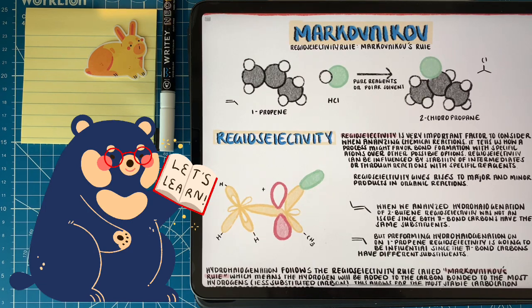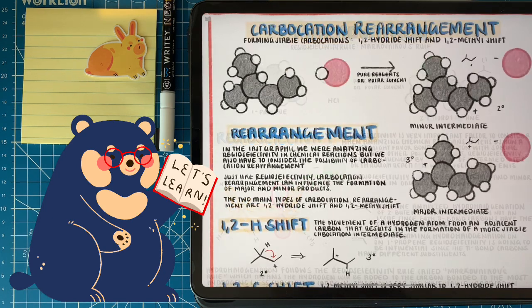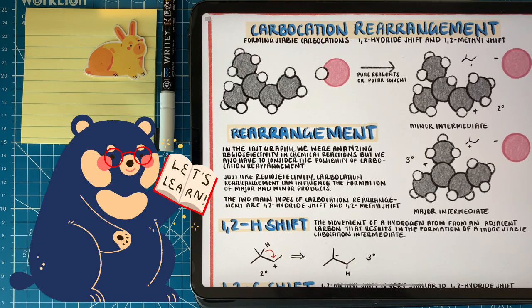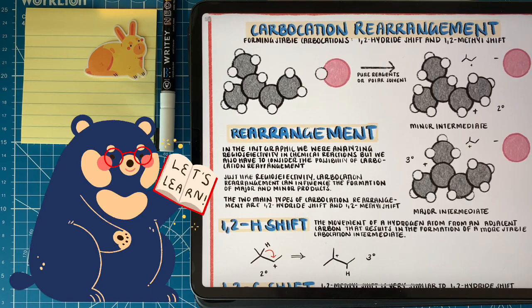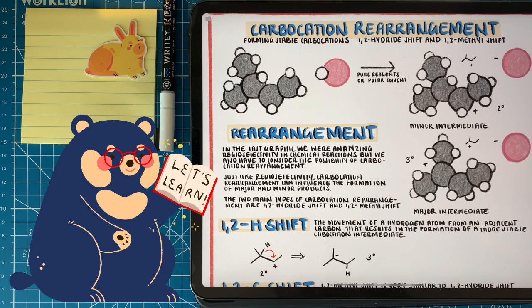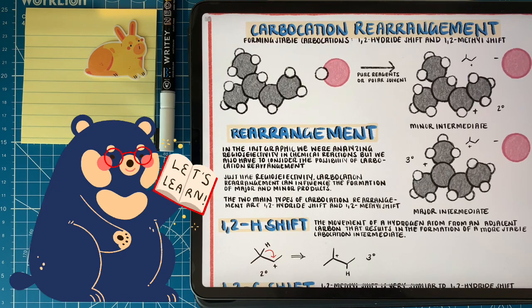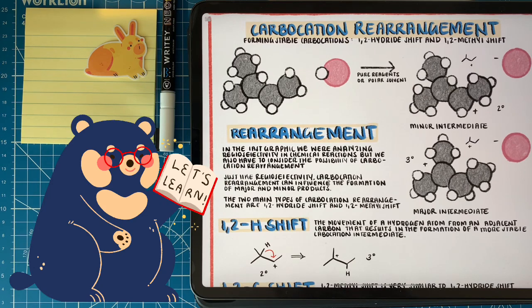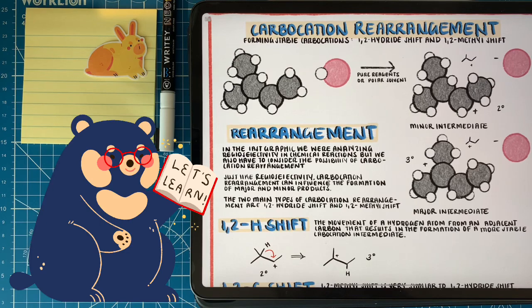But there's another thing we have to consider when talking about carbocations, and that's the possibility of methyl or hydride shifts. So here's the situation. We have that double bond reacting with that hydrogen halide, and we know it should form that carbocation, that one that's listed under minor intermediate, but the major intermediate is actually a different carbocation. How?